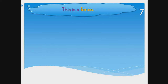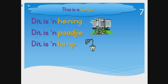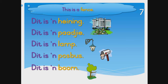Let's do some Afrikaans sentences. In English we would read: this is a fence. And in Afrikaans: dit is a heining. Dit is a bai-gi. Dit is a lamp. Dit is a posbis. Dit is a boom. Dit is a swy.